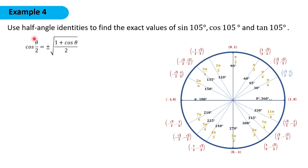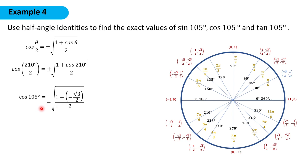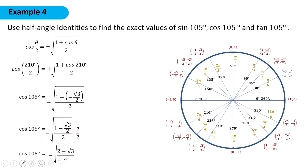To get cosine of θ/2, we use the half-angle formula with θ equal to 210°. Cosine 105° equals the negative square root of (1 plus cosine 210°) over 2. We take the negative square root because 105° is in the second quadrant and cosine is negative there. Cosine 210° is negative √3/2, so simplifying, we have negative square root of (2 minus √3) over 4. Therefore, cosine 105° equals the negative square root of (2 minus √3) over 2.